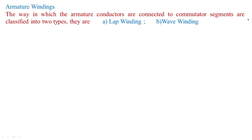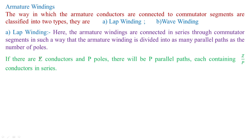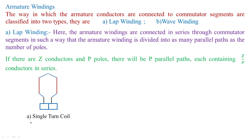The way in which the armature conductors are connected to the commutator segments is classified into two types: lap winding and wave winding. In lap winding, the armature windings are connected in series through commutator segments in such a way that the armature winding is divided into as many parallel paths as the number of poles. If there are Z conductors and P poles, there will be P parallel paths each containing Z/P conductors in series. This particular type of connection under lap winding is said to be a single-turn coil.